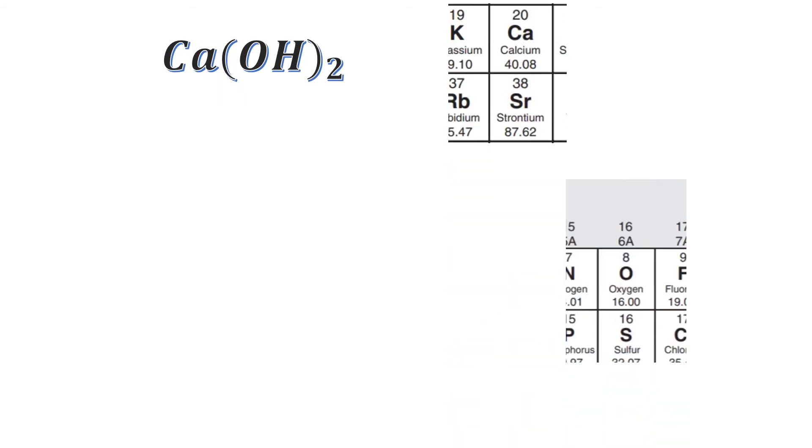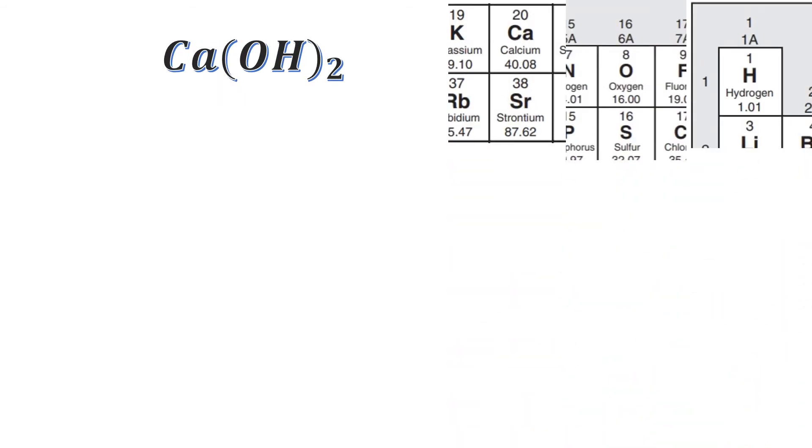So we're going to look at an example here right now. We have calcium hydroxide, which has the formula Ca(OH)2. And you'll notice I just brought up the elements that are in the formula and their spots on the periodic table. So what the formula is telling me is a couple of things.